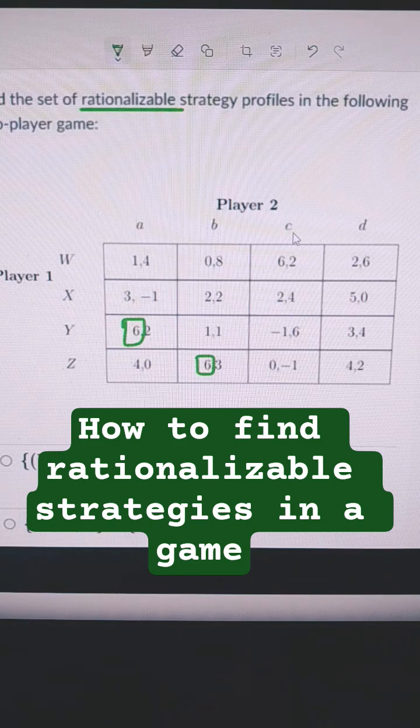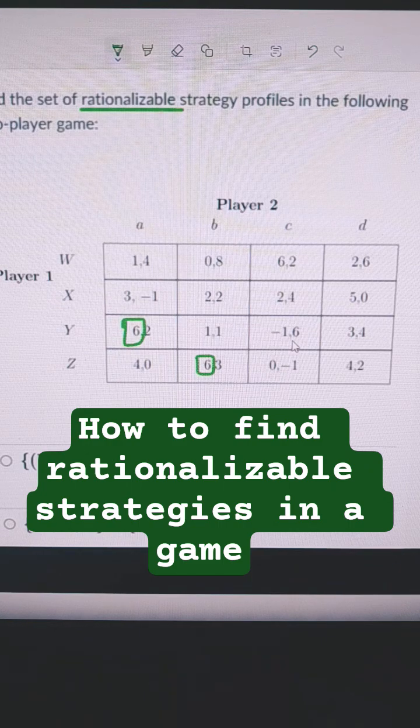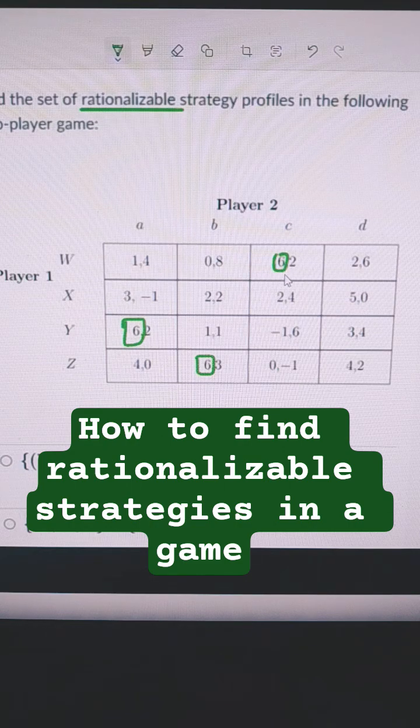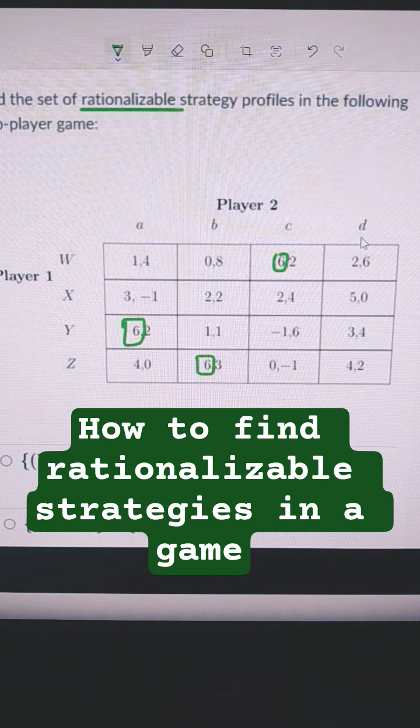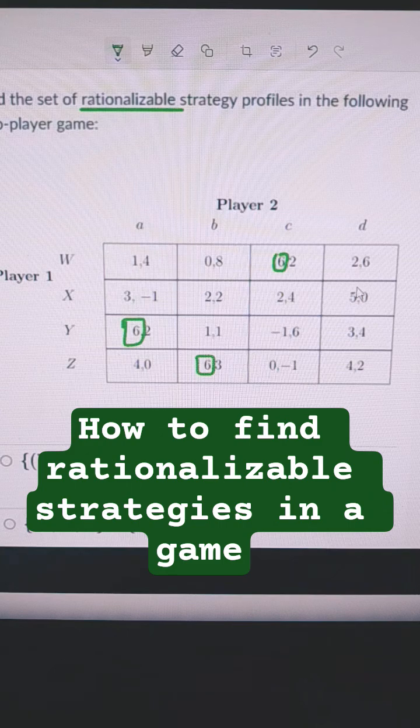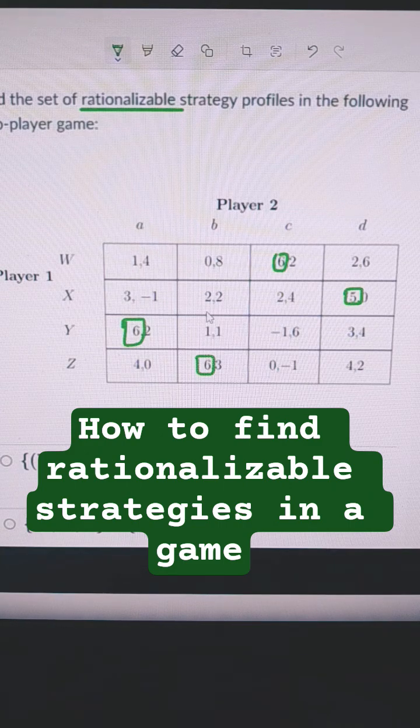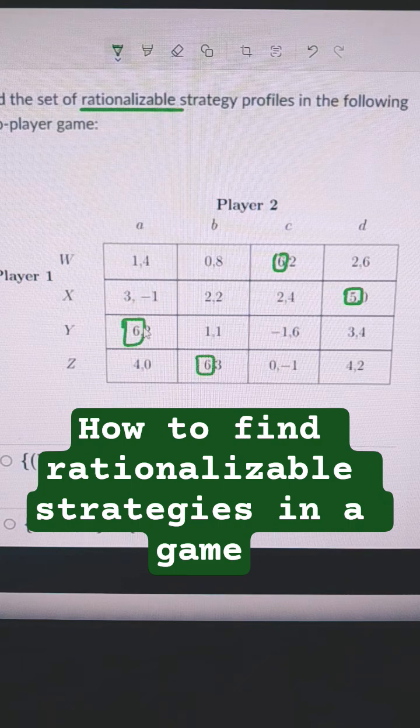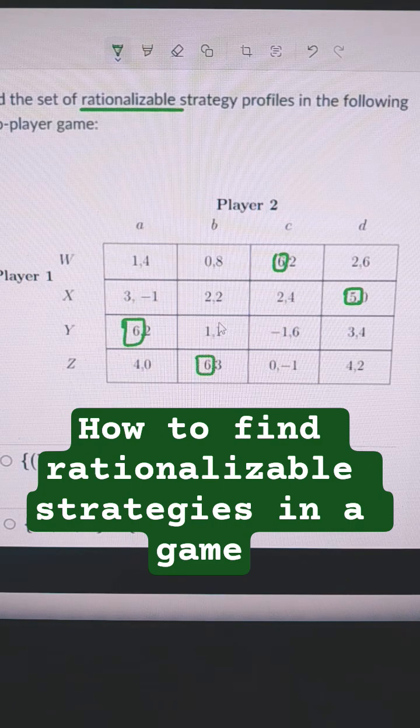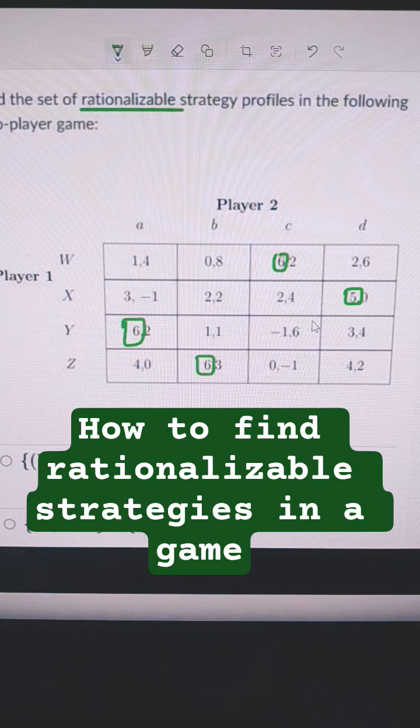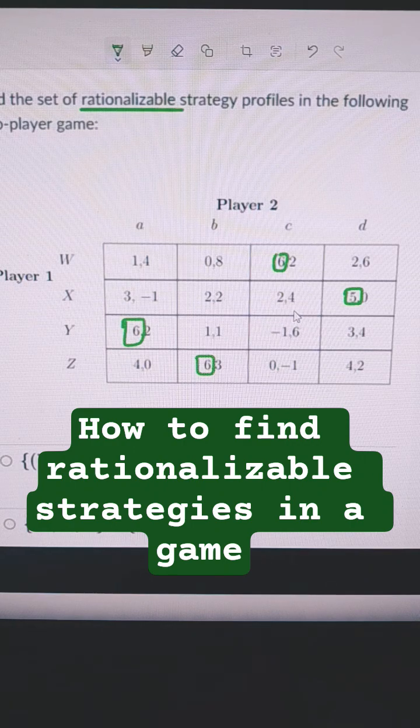If player two chooses C, player one should choose W and get 6.2. And then if player two does D, what's best for player one? That would be to choose X. So for player one, no strategy is dominated. Everything is going to be in play or rationalizable for player one.